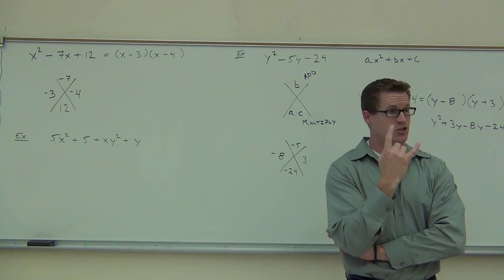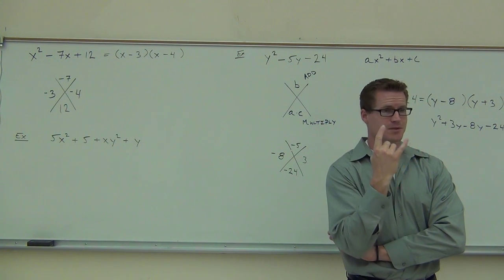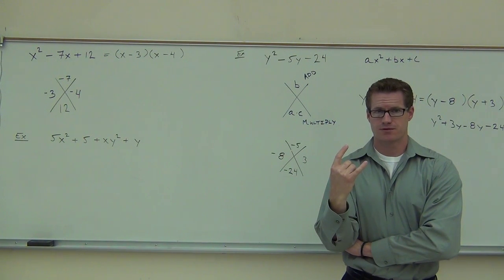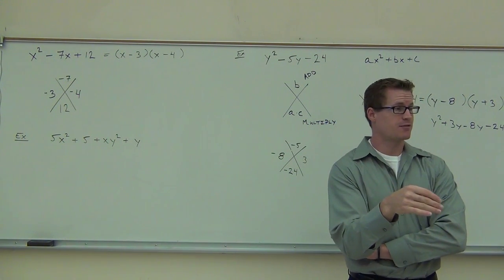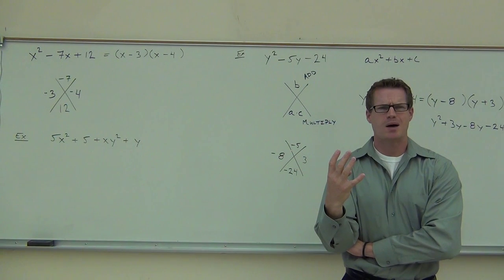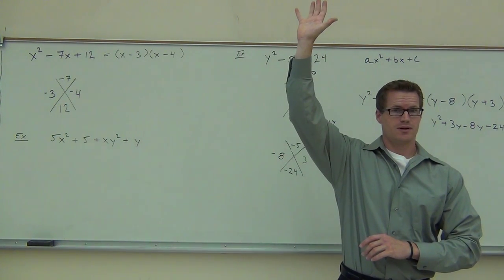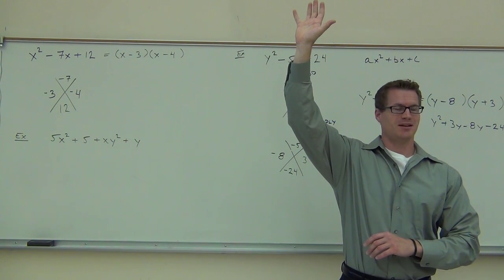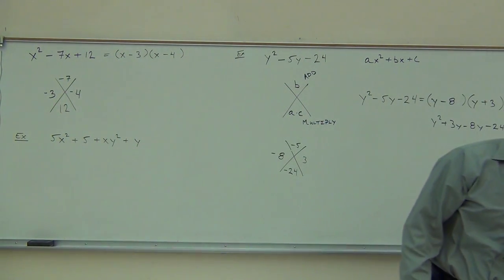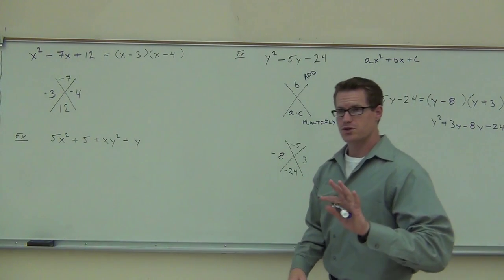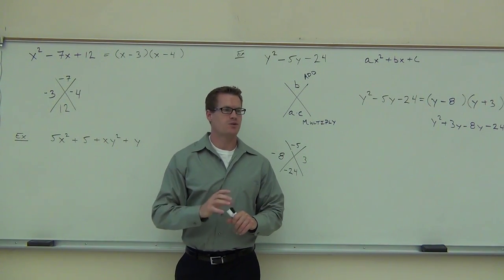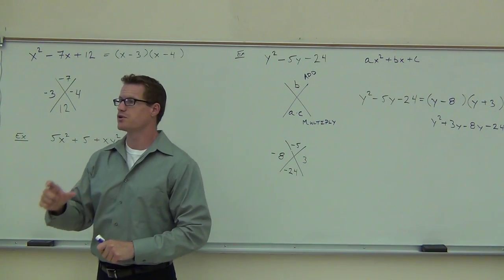Does it have exactly two terms? Could it be a difference of squares, a difference of cubes, or sum of cubes? So we move down. Does it have three terms? The next thing on your list was four terms - factor by grouping. Factoring by grouping works like this: since there's four terms, you look at the first two and you look at the last two kind of independently, and you factor out the greatest common factor from each of those pairs of terms.